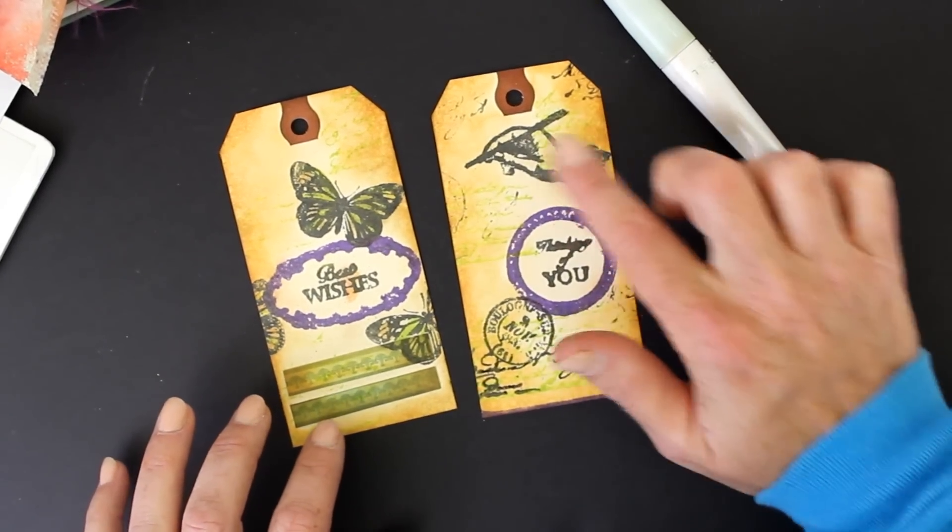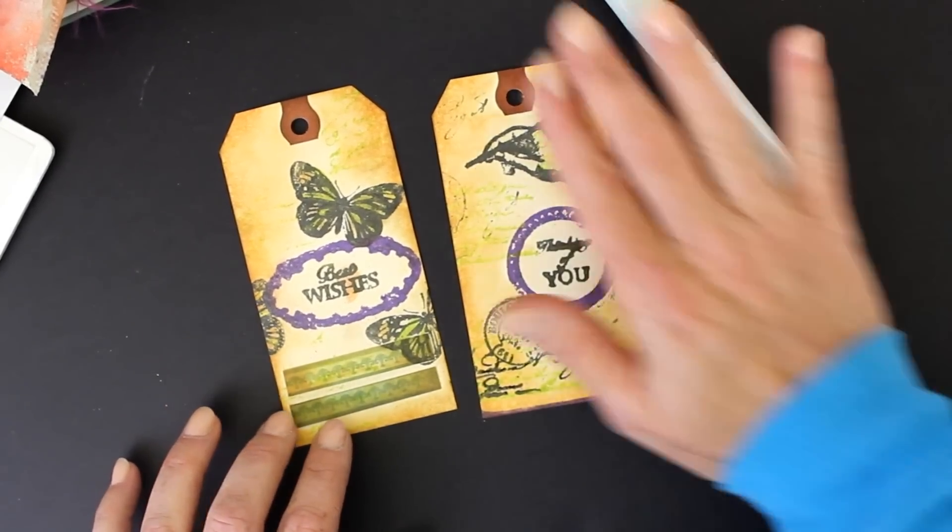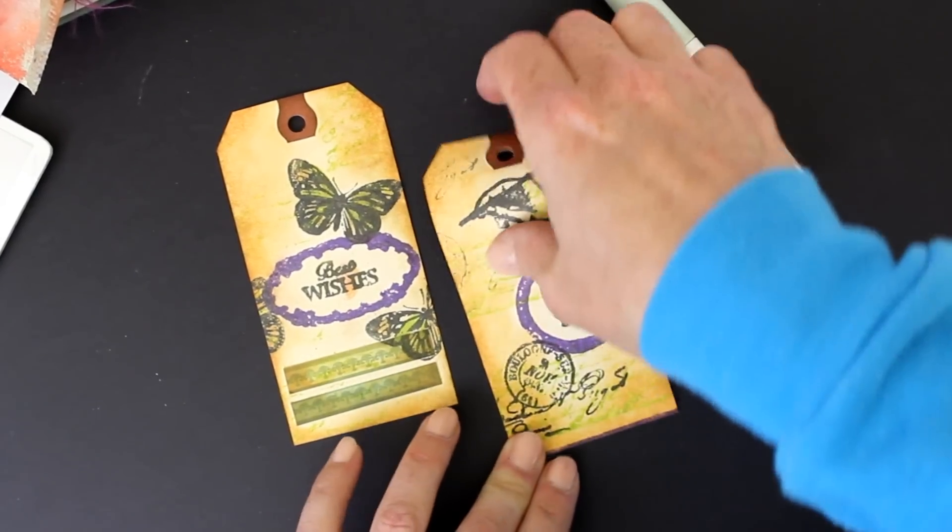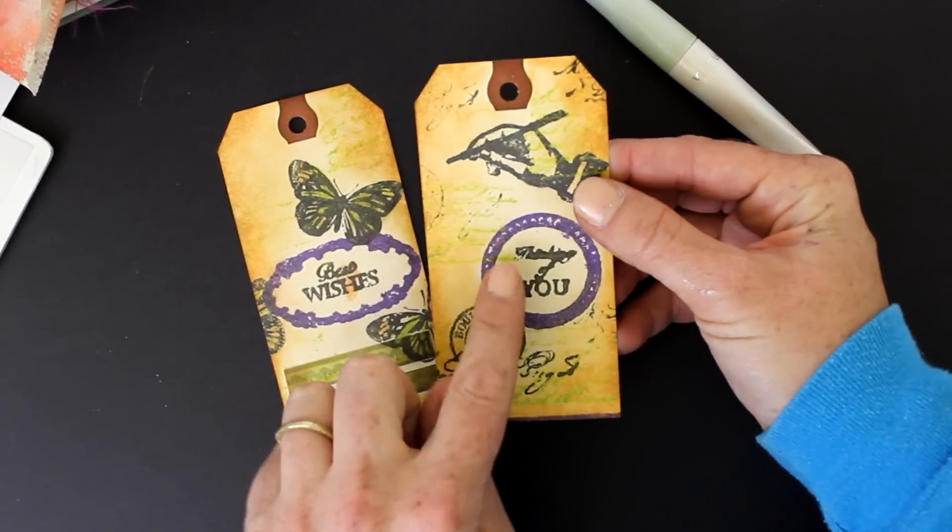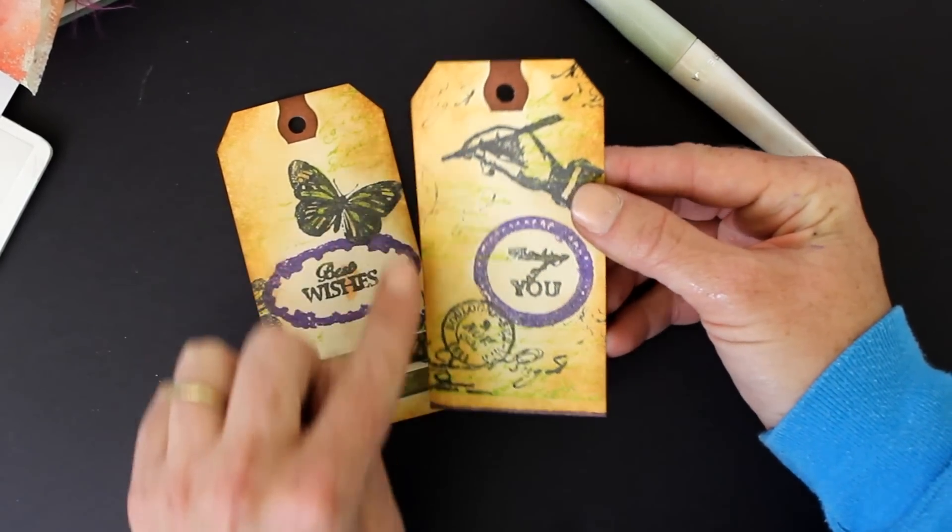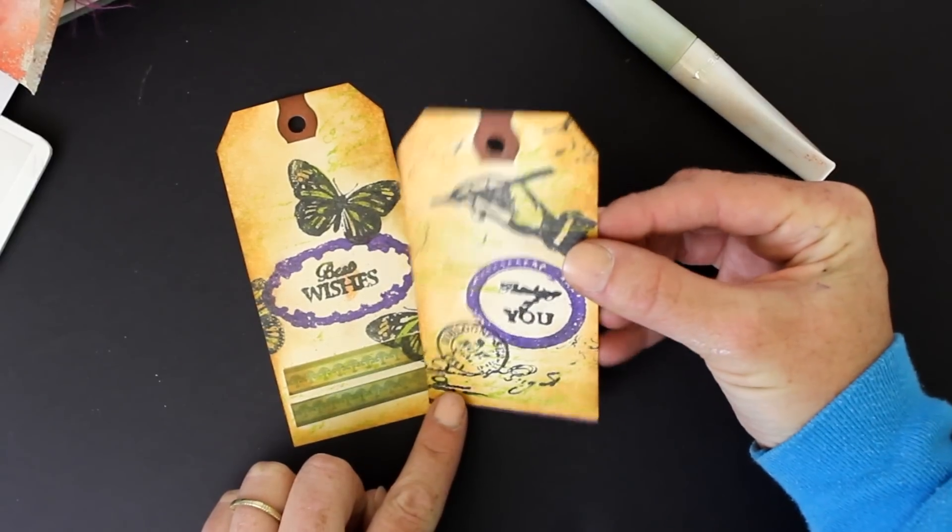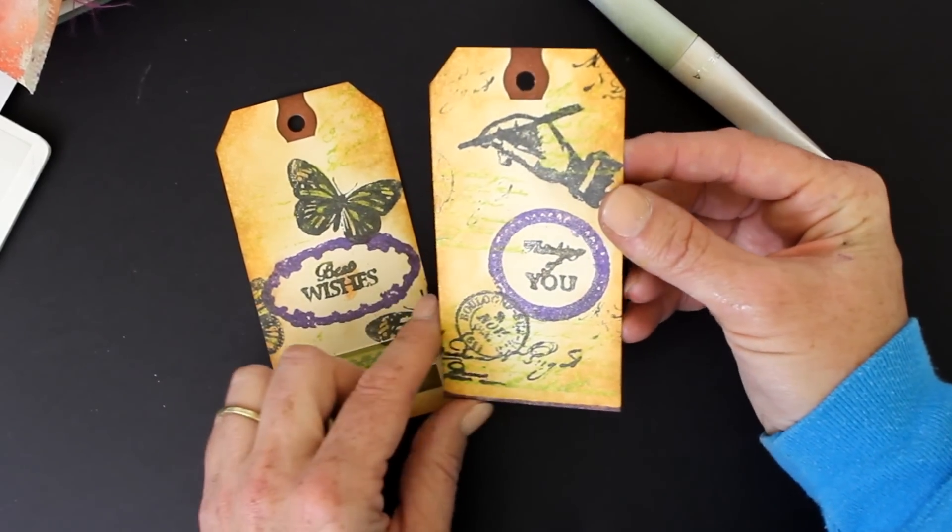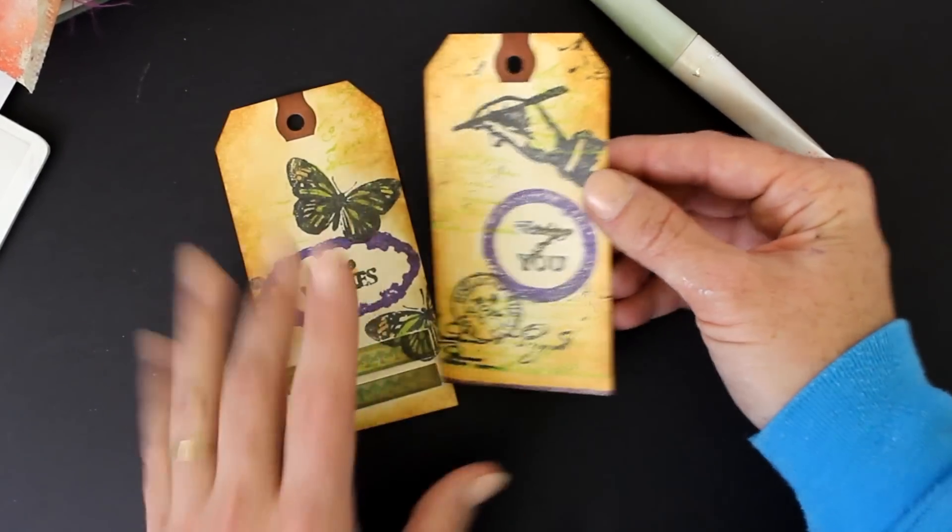Then I used some Archival inks over the top, and I really like actually how you can kind of see that the green almost repelled the Archival inks. So it still stays shimmery even with the Archival ink over top, which I used to kind of age it down.